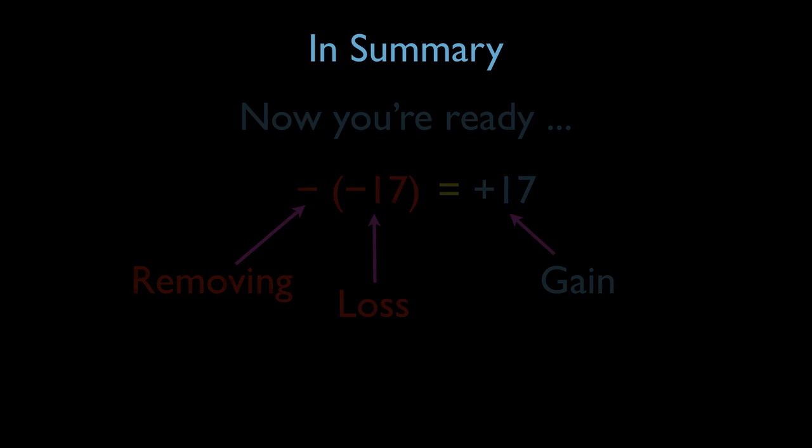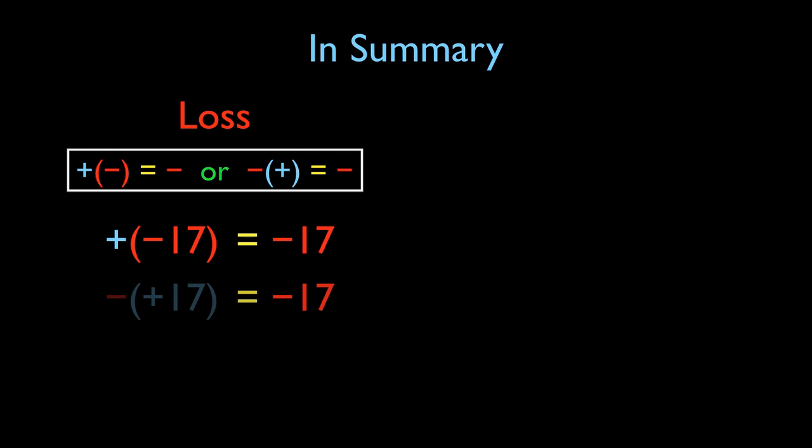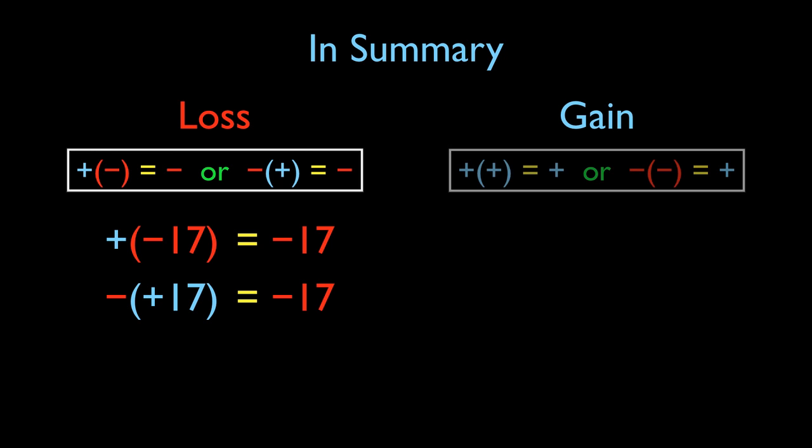So in summary, a loss occurs whenever you are trying to add a negative or subtract a positive. So adding a negative produces a negative or subtracting a positive produces a negative. Now, the flip of that is that you are gaining any time you are adding a positive or subtracting a negative. So plus plus is plus, minus minus is plus. And it's that last situation, the negative negative 17 being a positive 17, which we've now worked through and reasoned through.